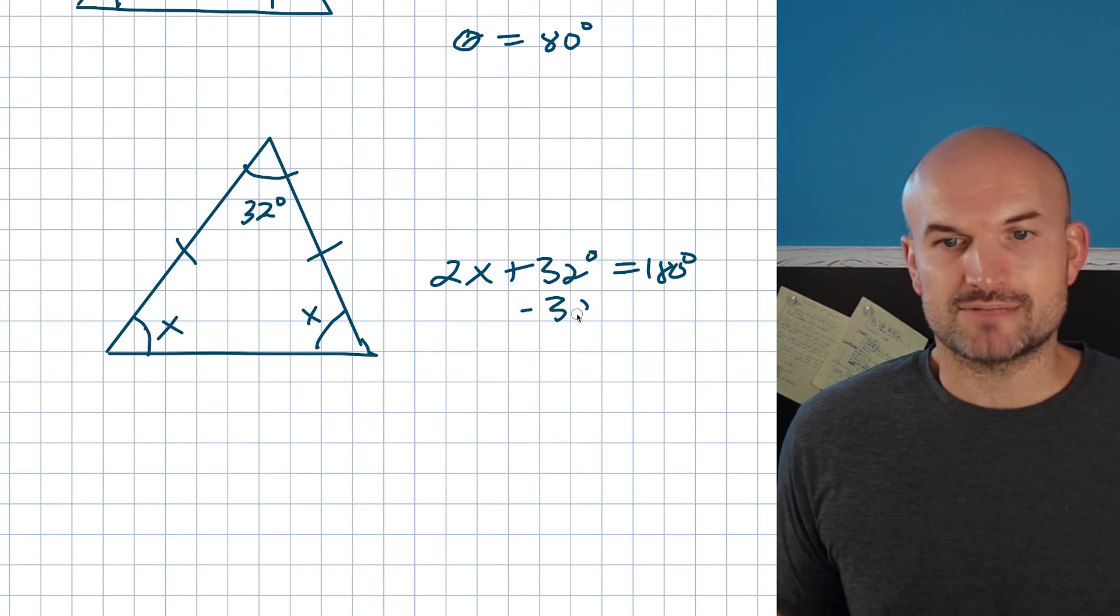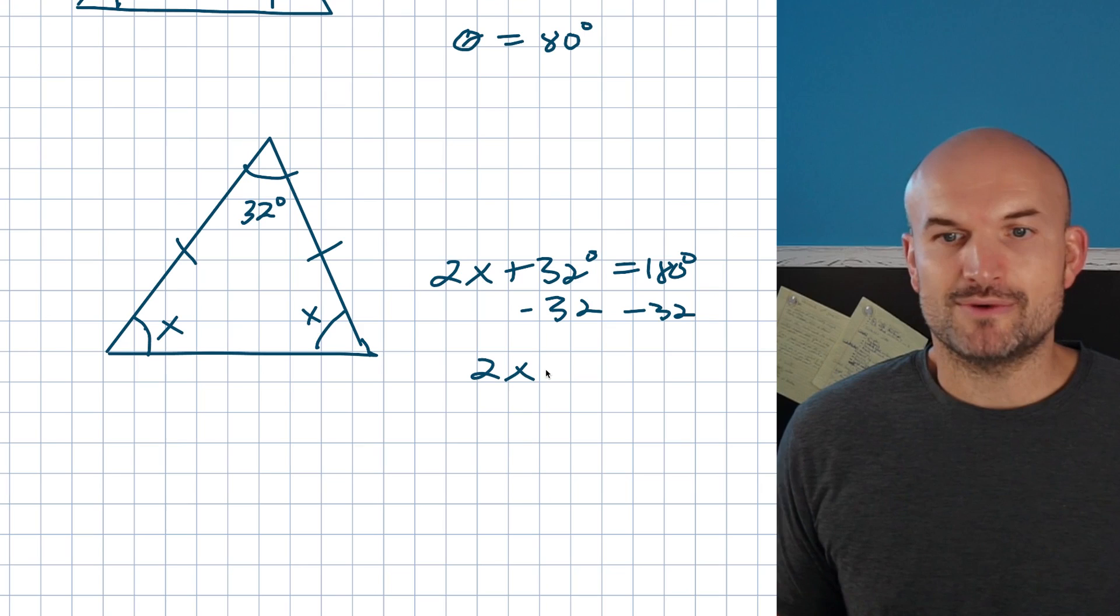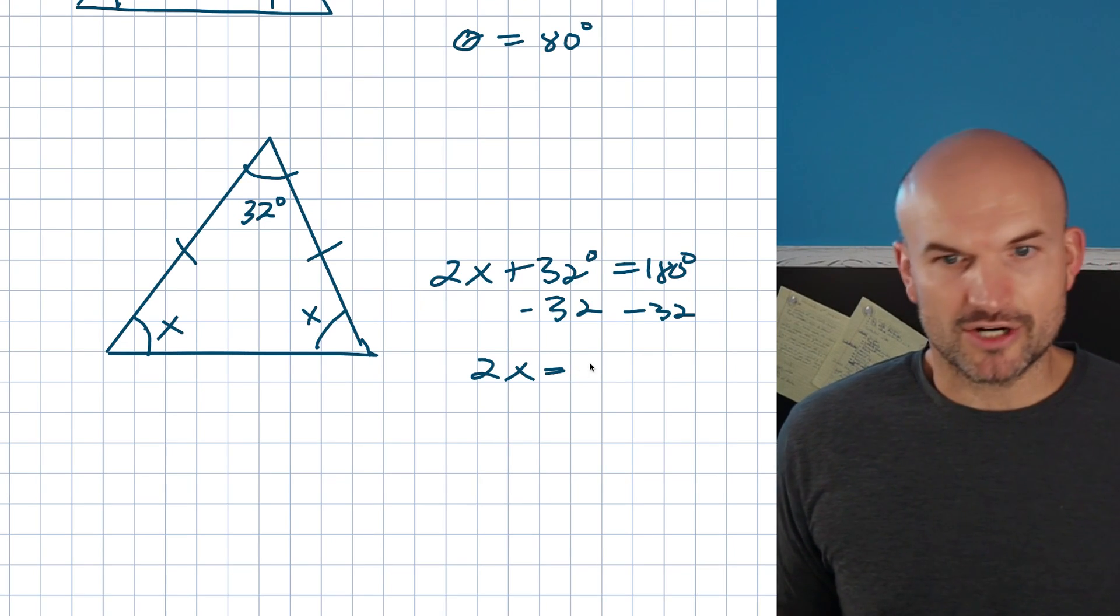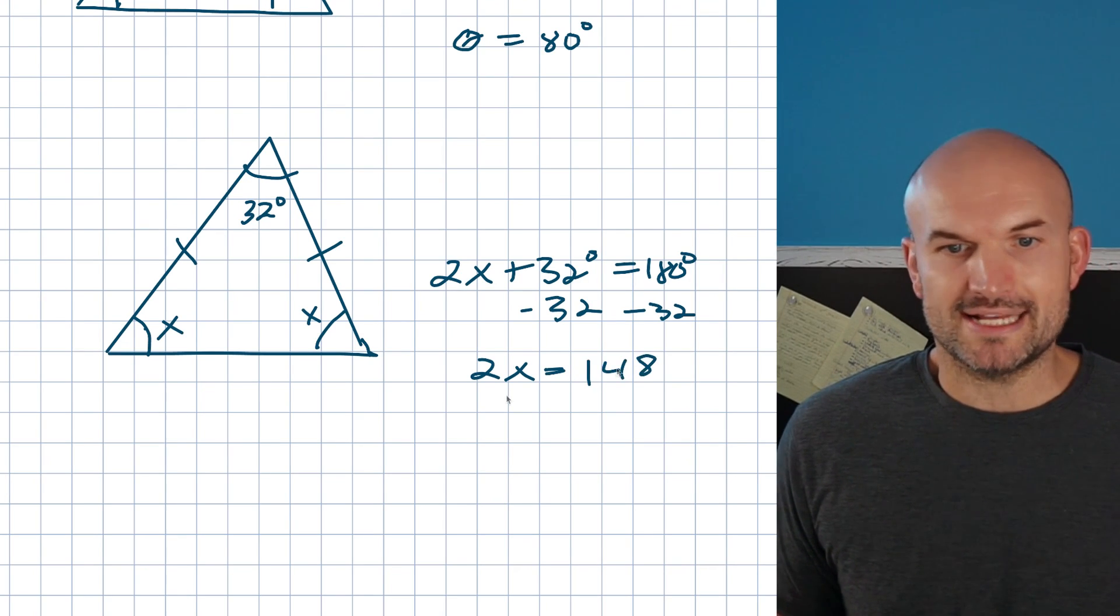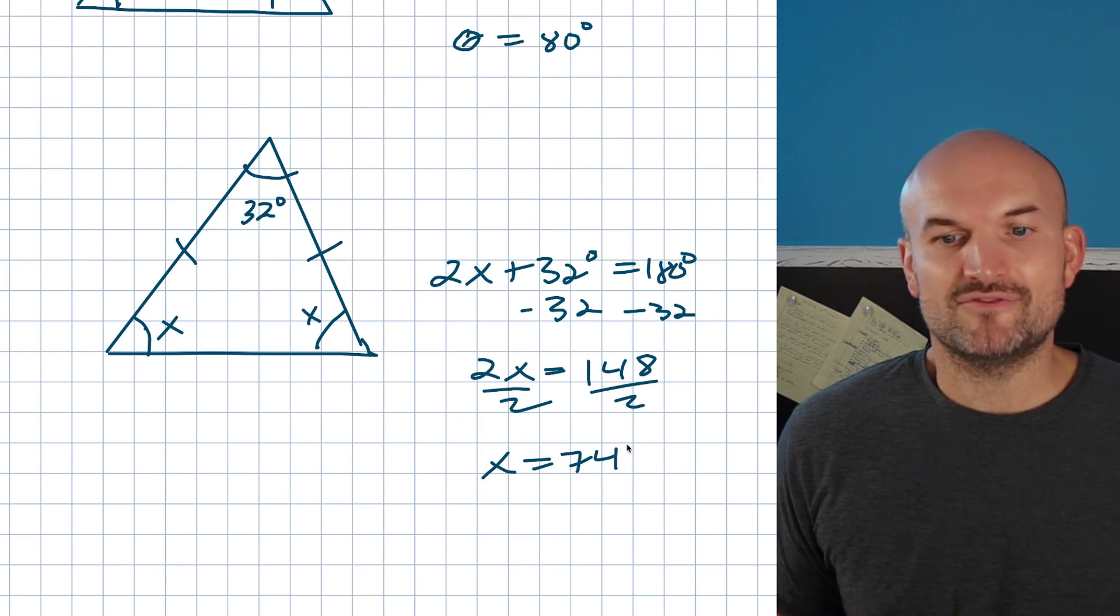So, now you can subtract 32 degrees, and you get 2x is going to equal, let's see, that's going to be 148, so 148, then divide by 2, divide by 2, x is going to equal 74 degrees.